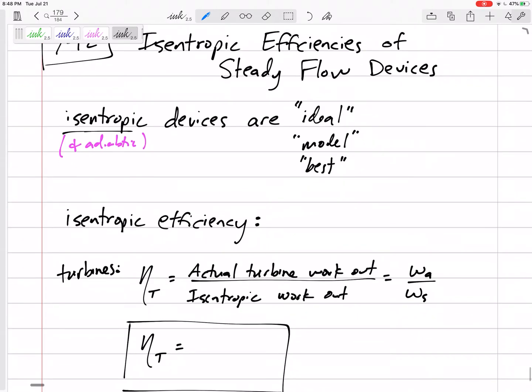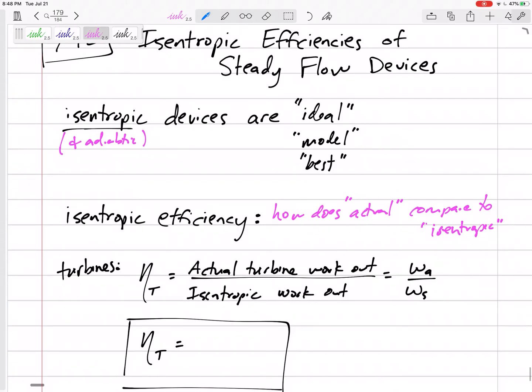But isentropic devices are the best, so we want to ask: how does our actual device compare to the isentropic? That's what isentropic efficiency is—how close is it to the best. When we talk about efficiencies,